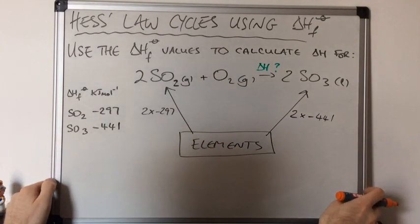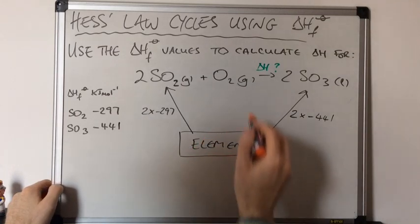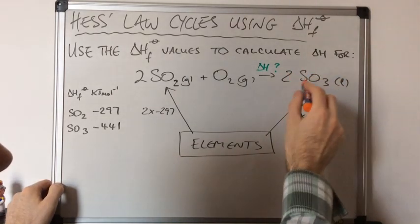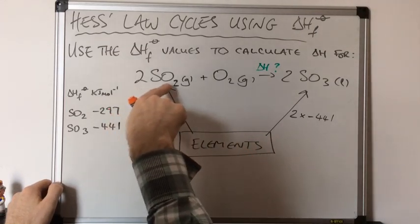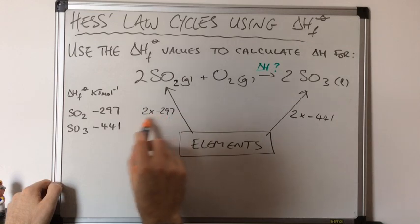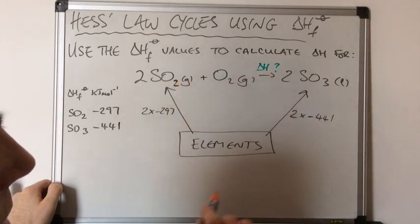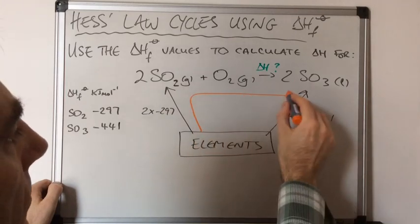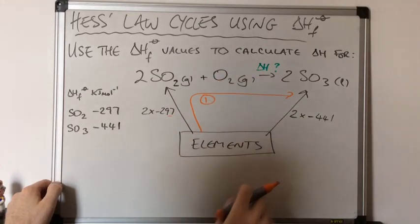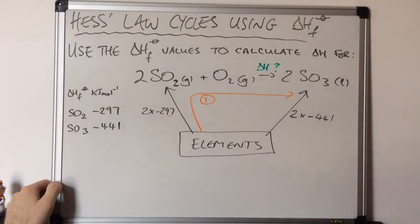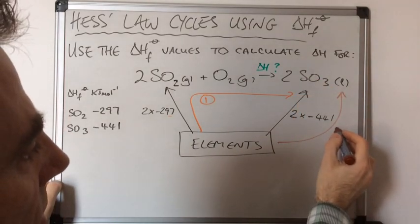Looking at Hess's law now: the common starting point is the elements box, and the finish point is the two SO₃'s. Route 1 would be forming two SO₂'s — with that enthalpy change — then reacting with O₂ with the unknown enthalpy change. So route 1 equals that formation value plus the unknown value. Route 2 is the simpler route, going directly from the elements to the two SO₃'s.